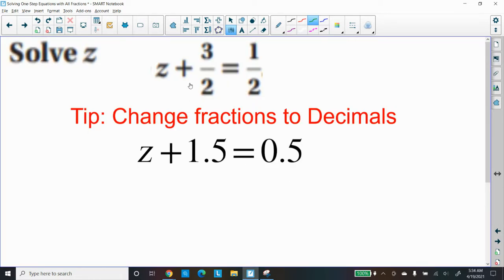Here I have that same problem we just mentioned a minute ago. I got my calculator, and typed three divided by two, that gave me 1.5. And then I typed one divided by two, that gave me 0.5. My equation really is, as a decimal, z plus 1.5 equals 0.5.